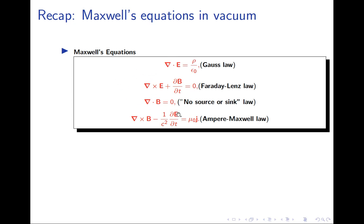These equations are statements about the curl and divergence of electric and magnetic fields. The first is Gauss's law: divergence of E equals charge density over epsilon naught. Faraday's law gives curl of E plus dB/dt equals zero. The divergence of B vanishes, reflecting no magnetic monopoles. Finally, Maxwell corrected Ampere's law by adding the displacement current term, making it consistent with conservation of charge.